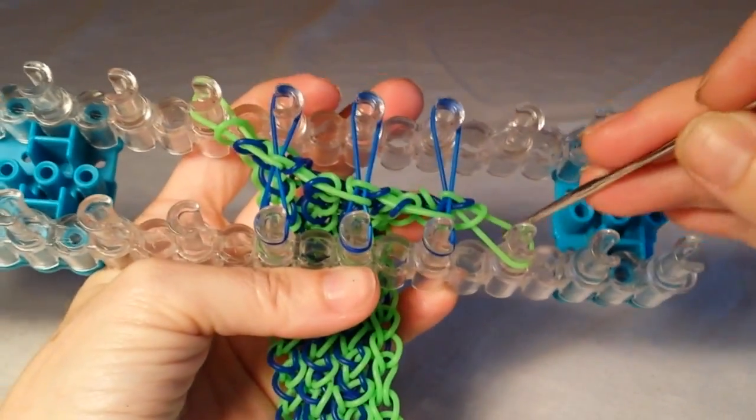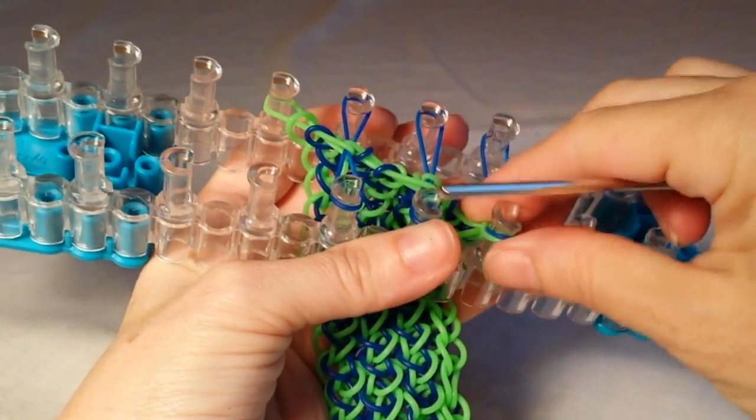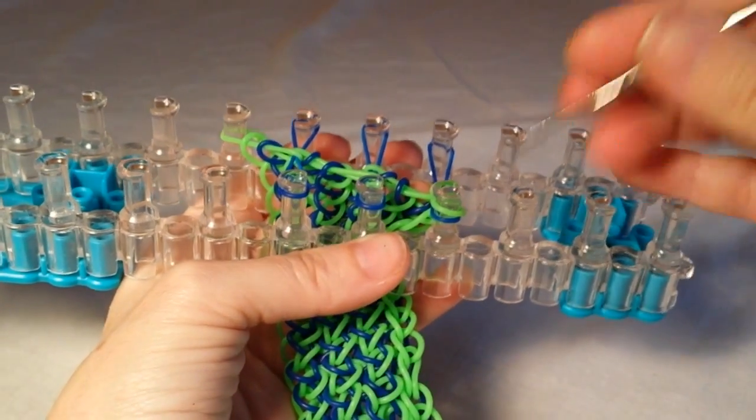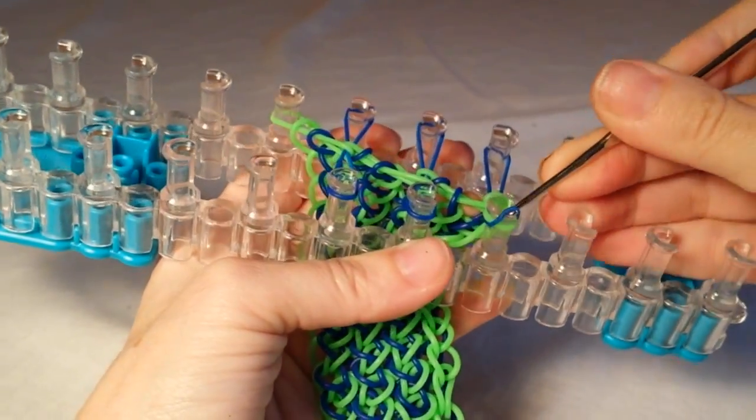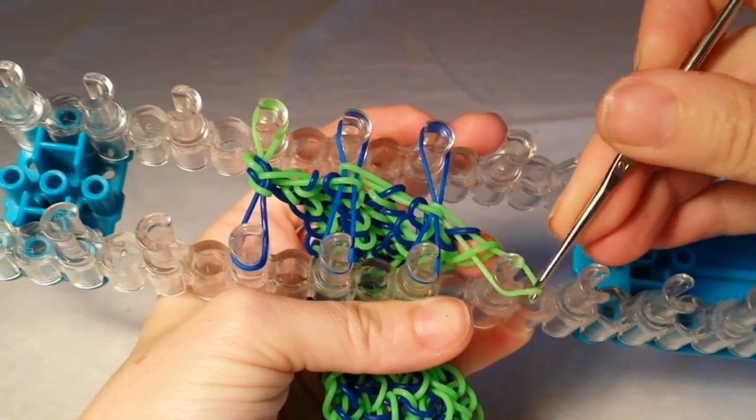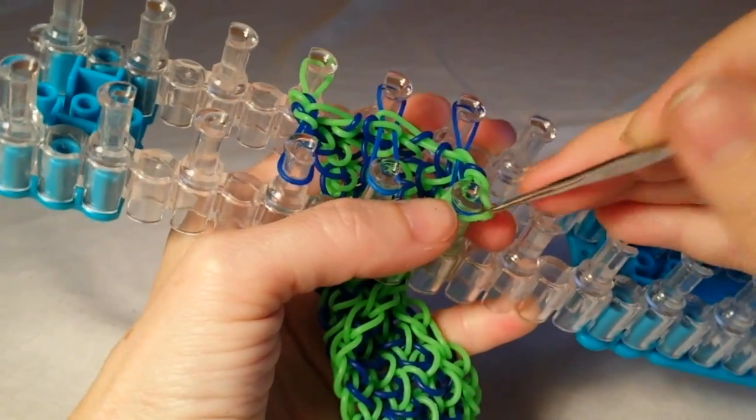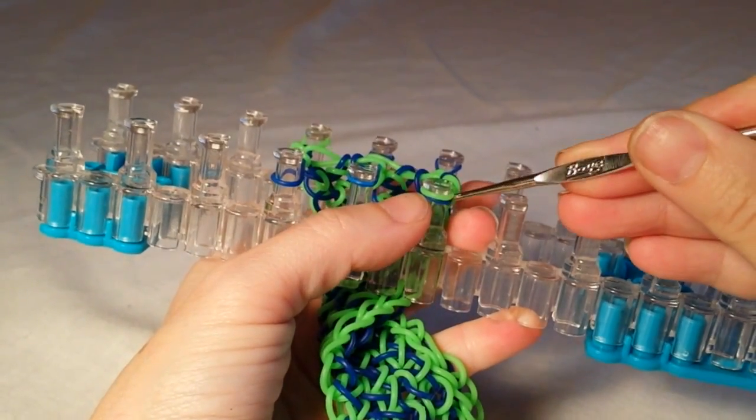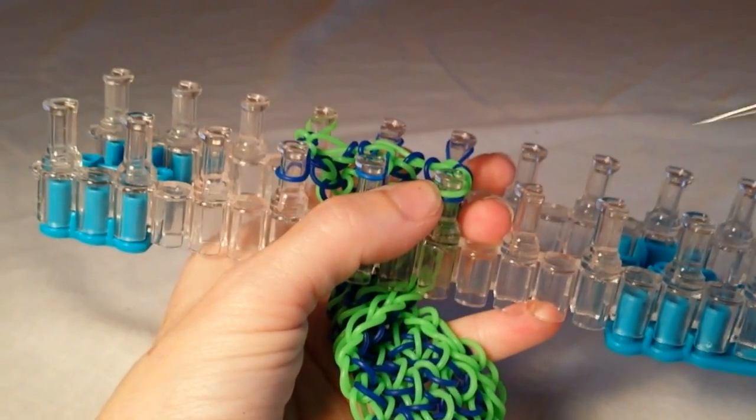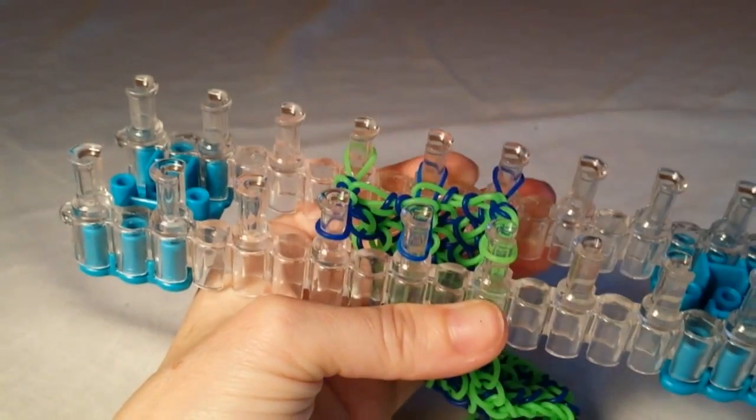I'm going to take this end one off and move it over one place, and I'm going to pull the bottom up over it. I'm going to do the same thing on the other side. Take the end one off, move it over one place, and then pull the bottom one up over top of it. And push everything down.